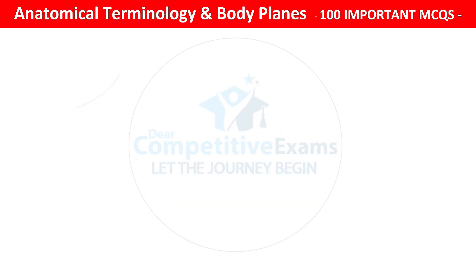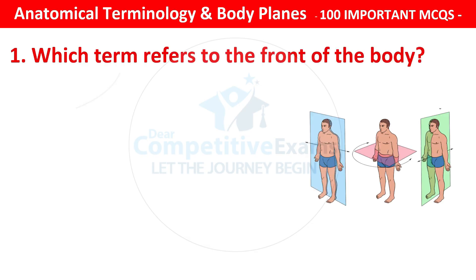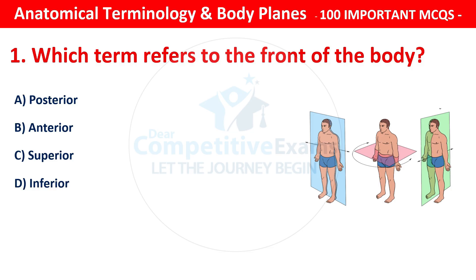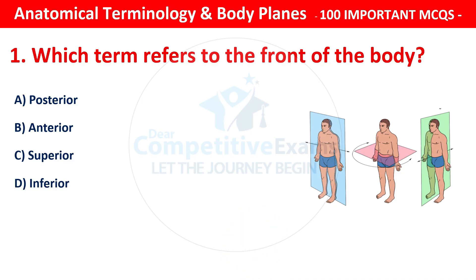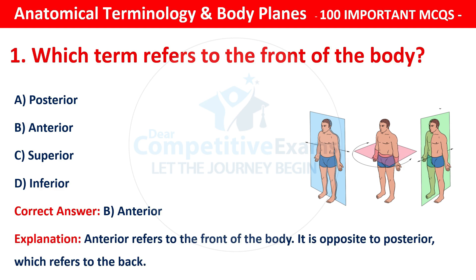The very first question is: which term refers to the front of the body? Options are: posterior, anterior, superior, or inferior. The correct answer is B — that is anterior. Anterior refers to the front of the body. It is opposite to posterior, which refers to the back.